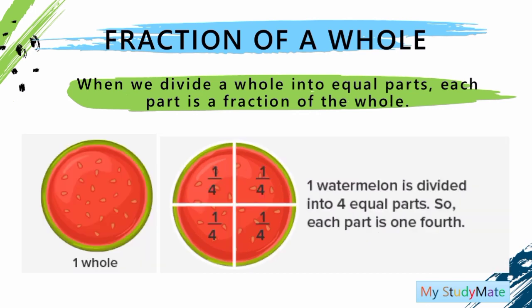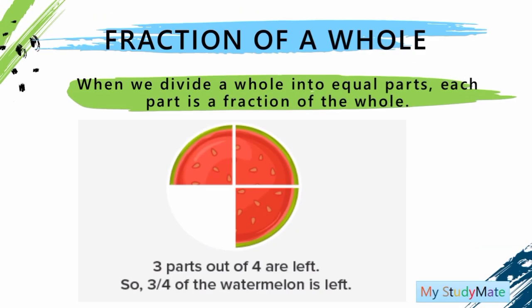Suppose that one watermelon is divided into four equal parts, so each part is one fourth. Since one part of the watermelon was eaten, then three parts out of four are left. So, three parts of the watermelon is left — one part, another one part, and one more part, for a total of three parts of the watermelon.